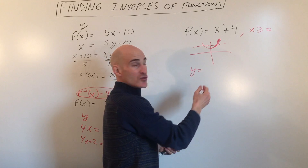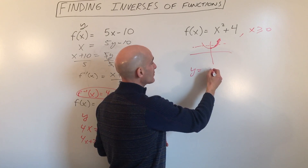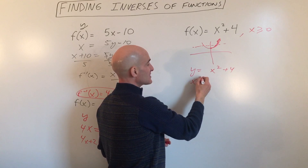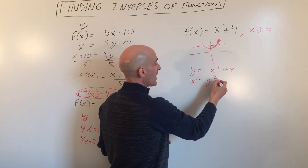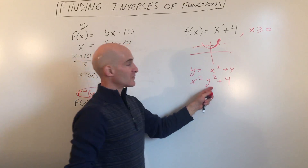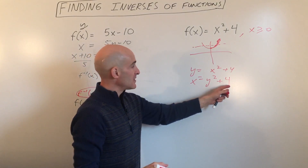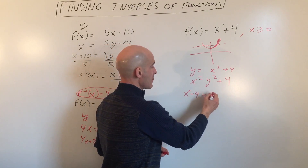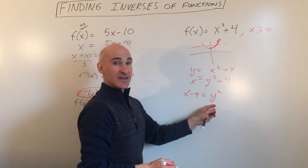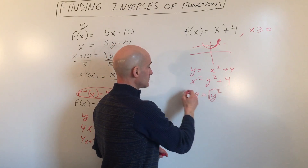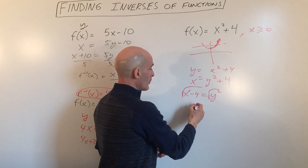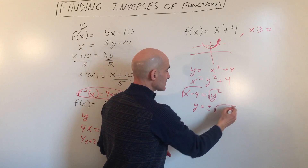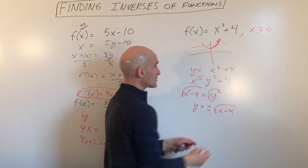We're going to do the same process: switch the x and the y. So instead of y equals x squared plus 4, we write x equals y squared plus 4, and solve for the new y. I'm going to subtract 4, then take the square root of both sides. So we have y equals plus or minus the square root of x minus 4.